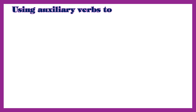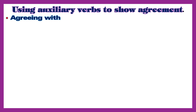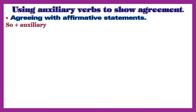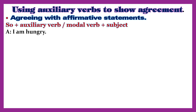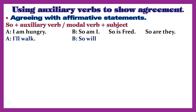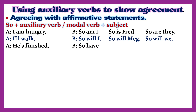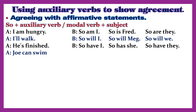Using auxiliary verbs to show agreement. Agreeing with affirmative statements: So + auxiliary/modal verb + subject. Example: A: I am hungry. B: So am I. So is Fred. So are they. A: I'll walk. B: So will I. So will Meg. So will we.